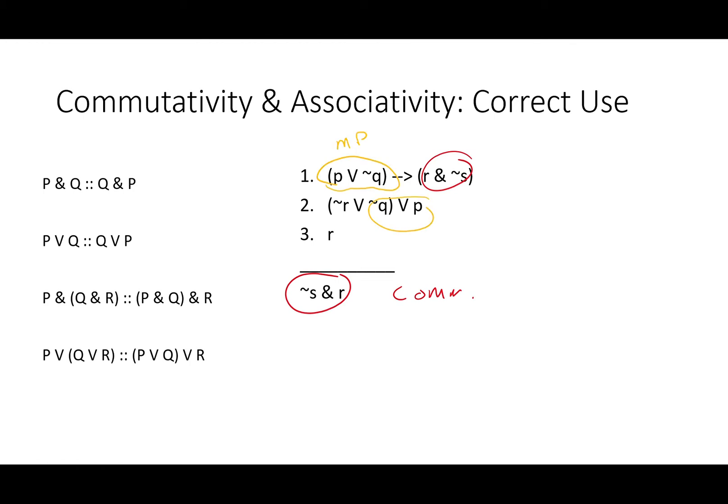And look at that. We're a commutativity and an associativity away from having the antecedent of that conditional. If only we could get rid of not R, well, maybe a disjunctive syllogism will do the job.